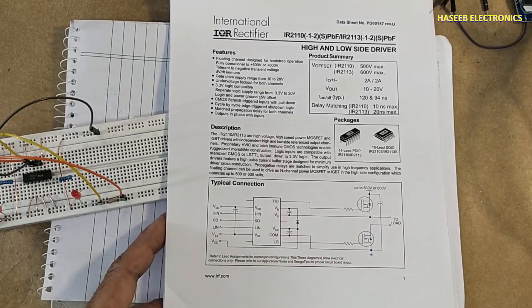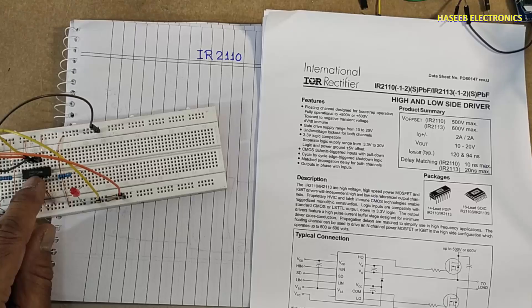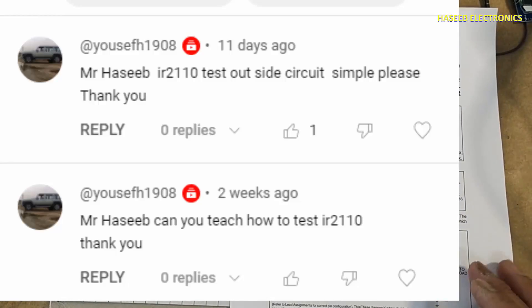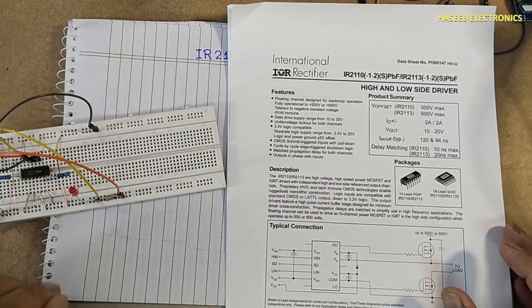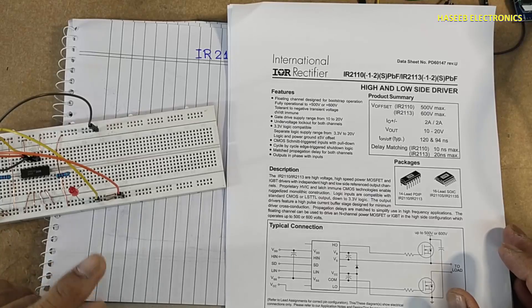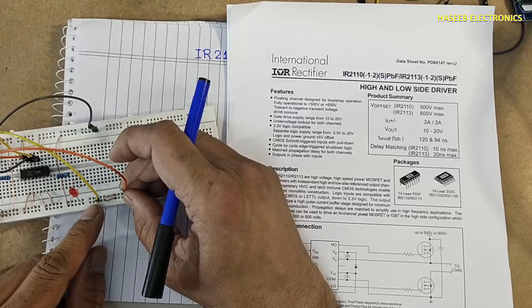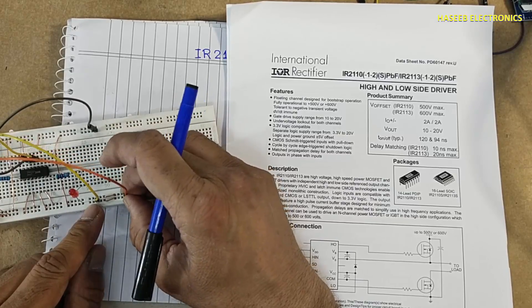This IR2110 is a 14-pin DIP IC. How we can test it is a question from my viewer. There are many ways we can test it, but in this video I will give the simplest technique, the simplest approach to test this IC.